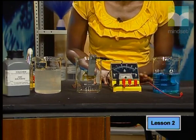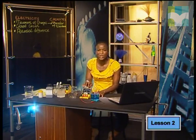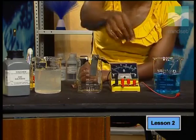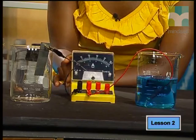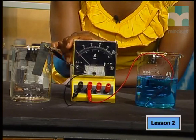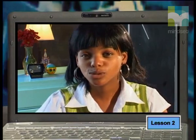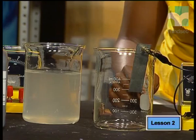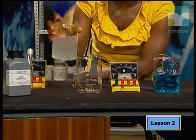Let's place a zinc plate in one beaker and copper sulfate in another beaker, which I've already mixed. Now we can use connecting wires and an ammeter to form a connection. What do you notice?